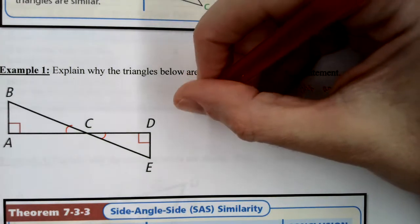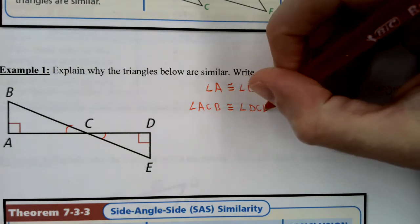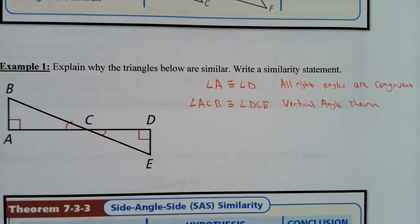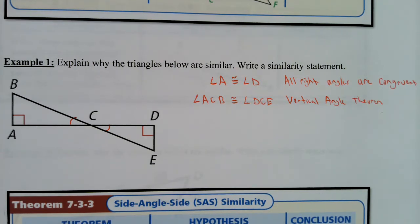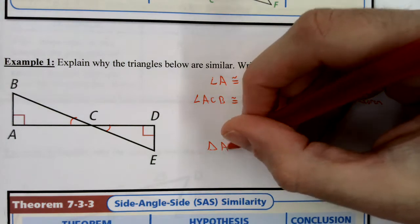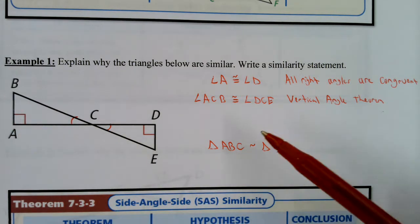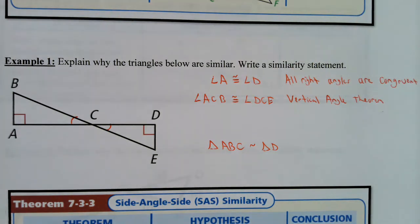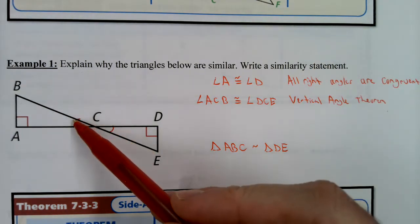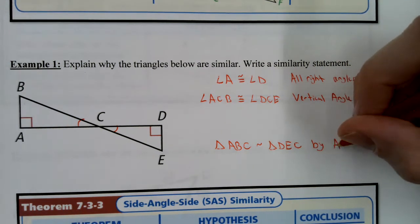So angle ACB is congruent to angle DCE by the vertical angle theorem. Therefore, triangle ABC is similar to triangle DEC. You have to go in the same order: angle A corresponds to angle D since they're both right angles, so D is written first. B corresponds to E, so E is second. C corresponds to C, so triangle ABC is similar to triangle DEC by angle-angle similarity.